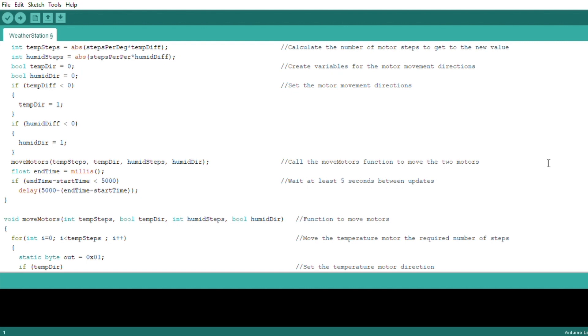Finally, we check to see that at least 5 seconds has passed between each update. If not, because neither gear moved in that cycle, the delay waits an additional time until 5 seconds has passed.